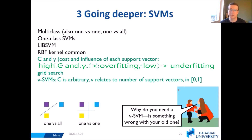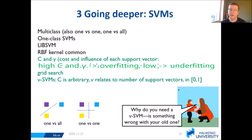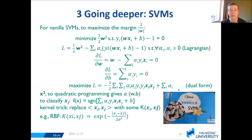These parameters also determine if you have overfitting or underfitting, and to find them you can do a grid search. Nu-SVMs are also quite common — C is often seen as a somewhat arbitrary value, whereas nu is a little bit more meaningful. But they're both good.